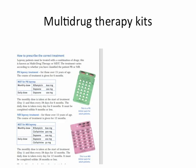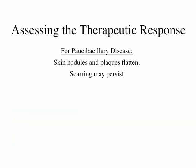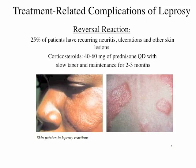The WHO uses multi-drug therapy kits overseas — they have them for kids and for adults, which is very efficient. In terms of assessing the therapeutic response: for paucibacillary disease, skin nodules flatten, plaques flatten, and scarring may persist. If the nerves have been previously damaged, you're probably not going to be able to treat them with antibiotics — you'll likely have some residual outcome from that.